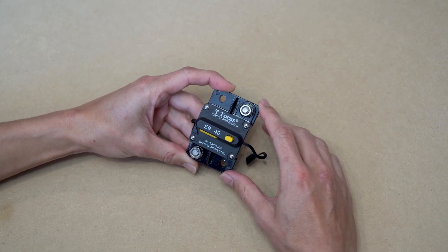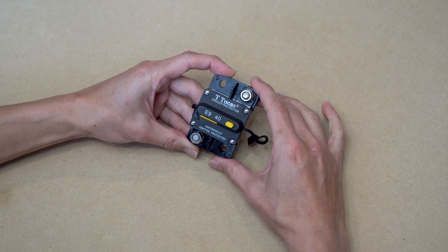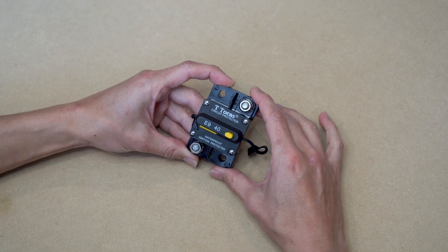This is a 40-amp breaker, which you can refer to here. So the yellow tab is designed to pop out when more than 40 amps of current is flowing through the wire.